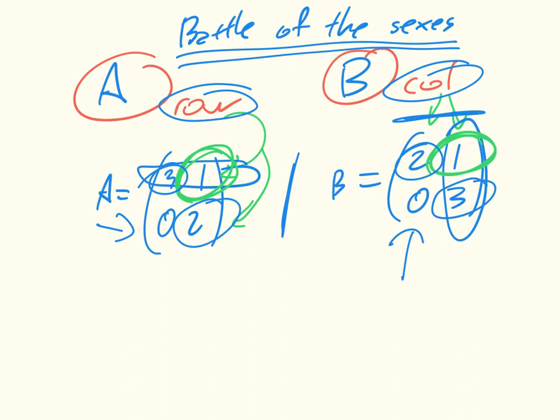And so game theory is going to be about, well, given these set of rules, what are valid strategies? And a strategy, in our particular case, is the choices of the movies. So, given all this setup, what should A and B do?